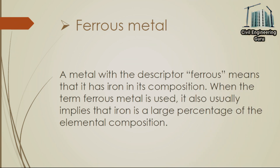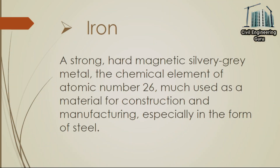Now moving toward the definition of ferrous metal: a metal with the descriptor ferrous means that it has iron in its composition. When the term ferrous metal is used, it also usually implies that iron is a large percentage of the elemental composition. Iron is a strong, hard, magnetic, silvery-gray metal — the chemical element of atomic number 26 — much used as a material for construction and manufacturing, especially in the form of steel.